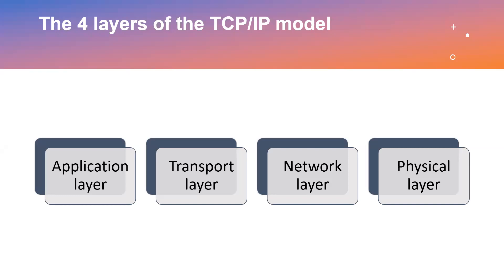The four layers of the TCP/IP model: TCP/IP functionality is divided into four layers, each of which includes specific protocols. The application layer provides applications with standardized data exchange. Its protocols include HTTP, FTP, Post Office Protocol 3 (POP3), Simple Mail Transfer Protocol (SMTP), and Simple Network Management Protocol (SNMP). At the application layer, the payload is the actual application data.